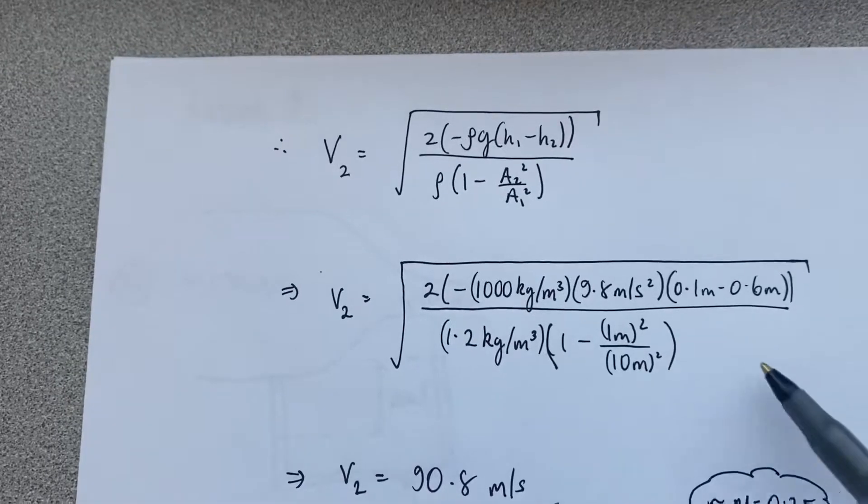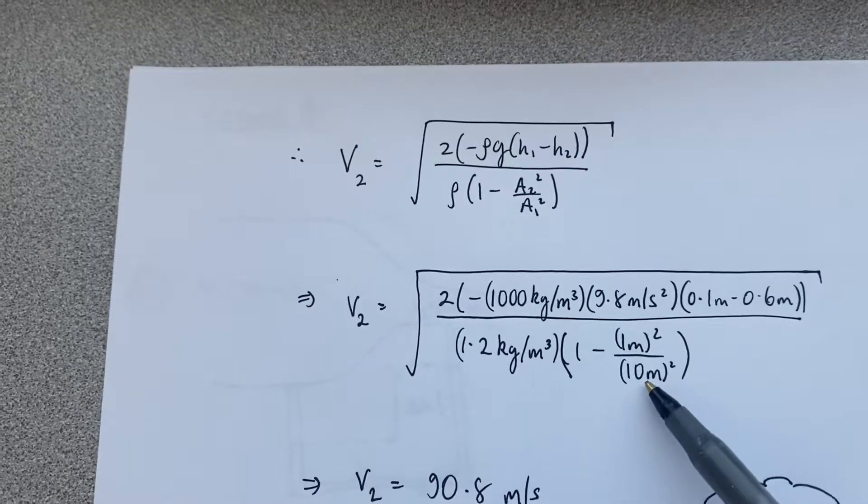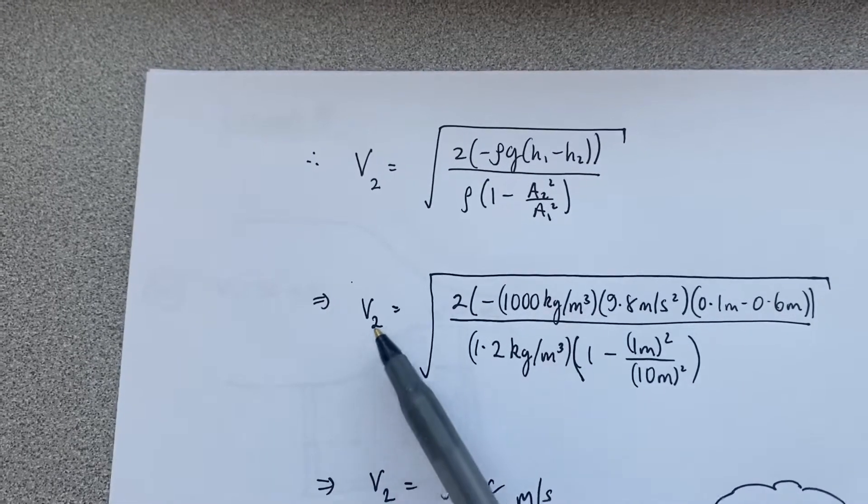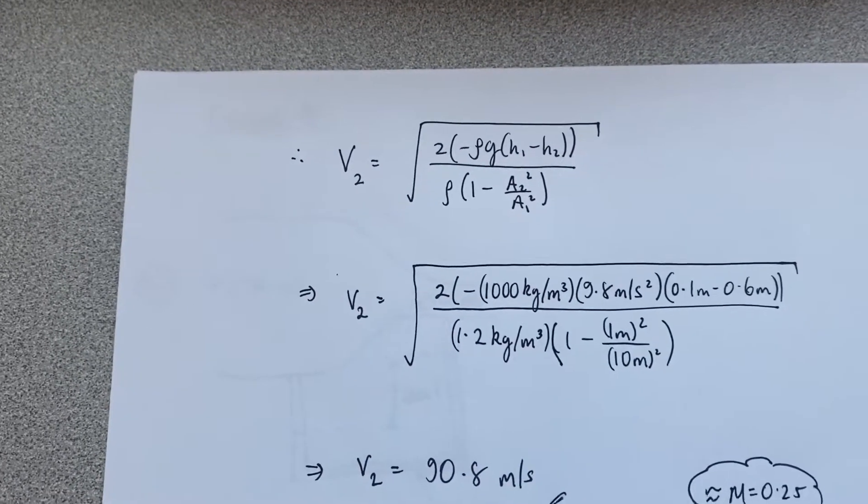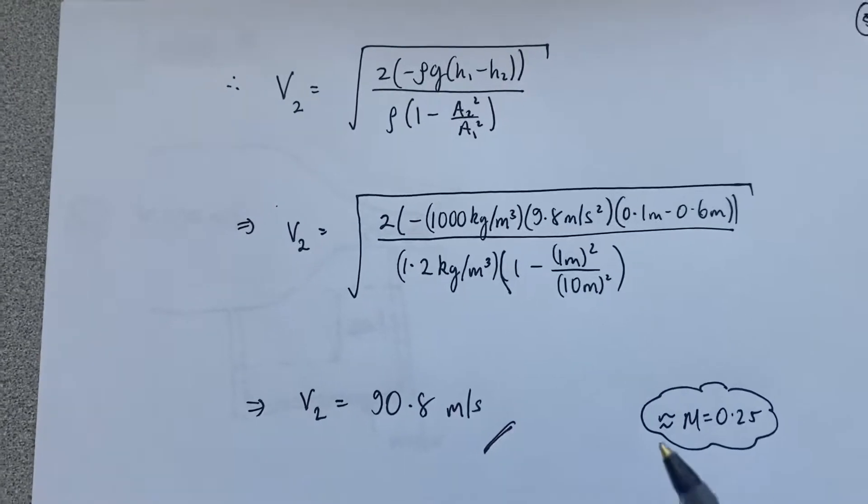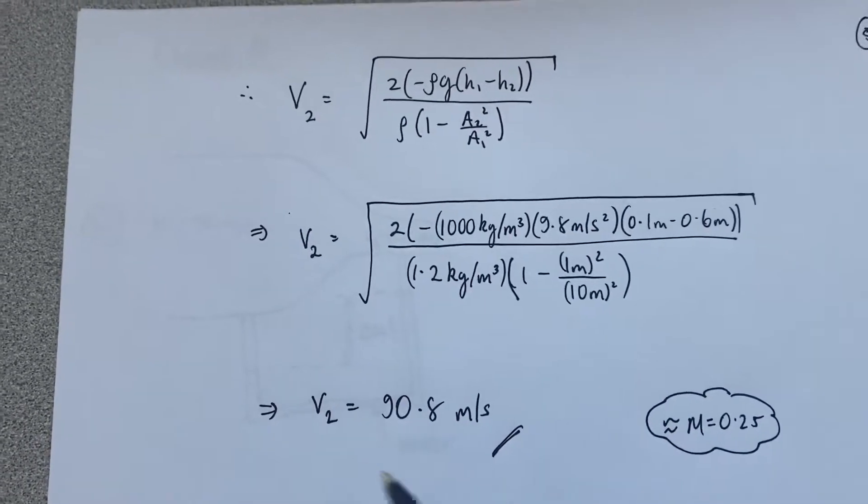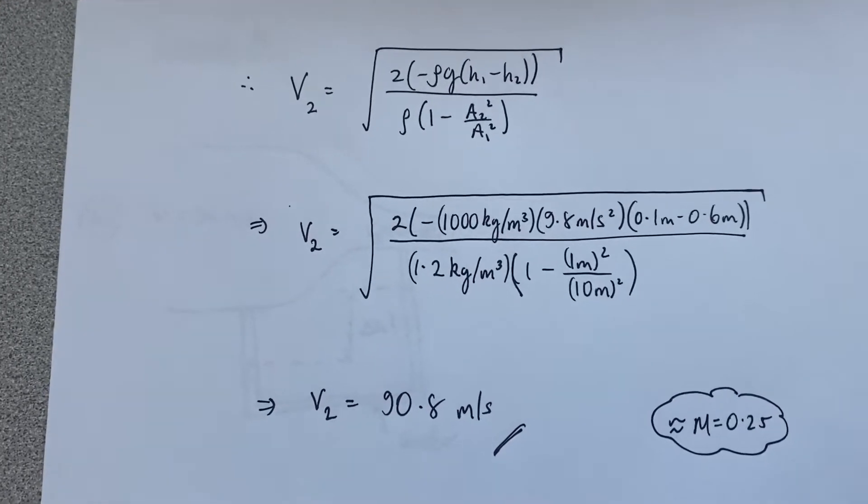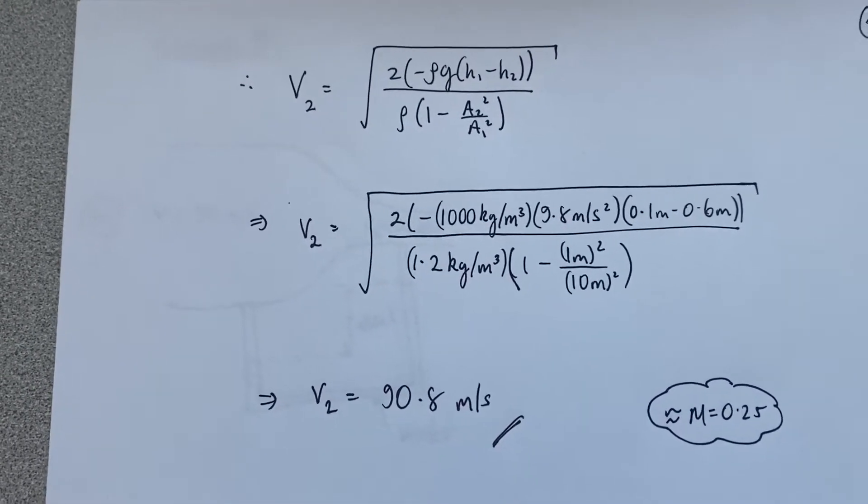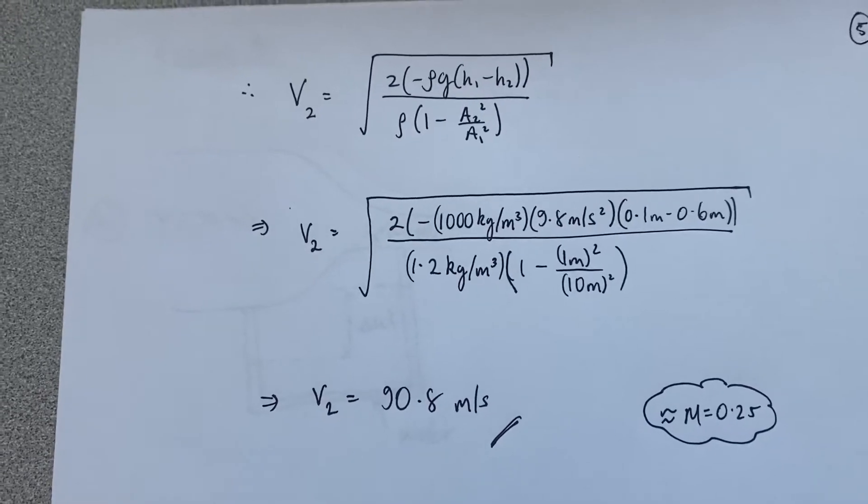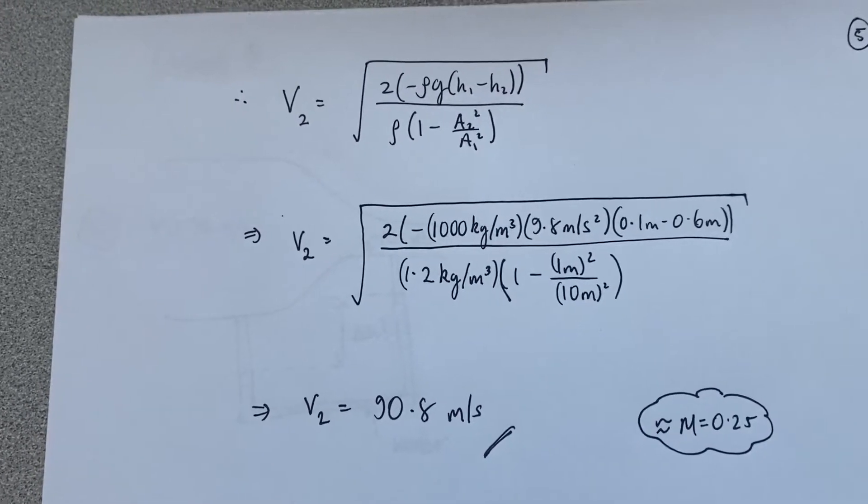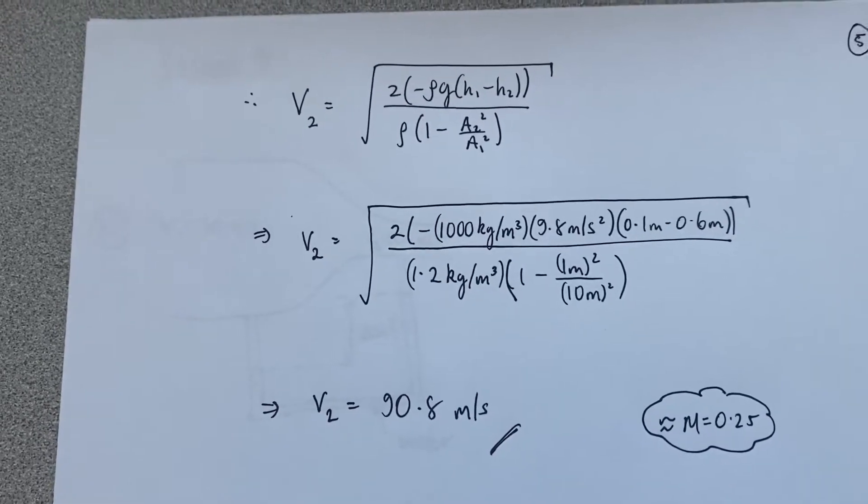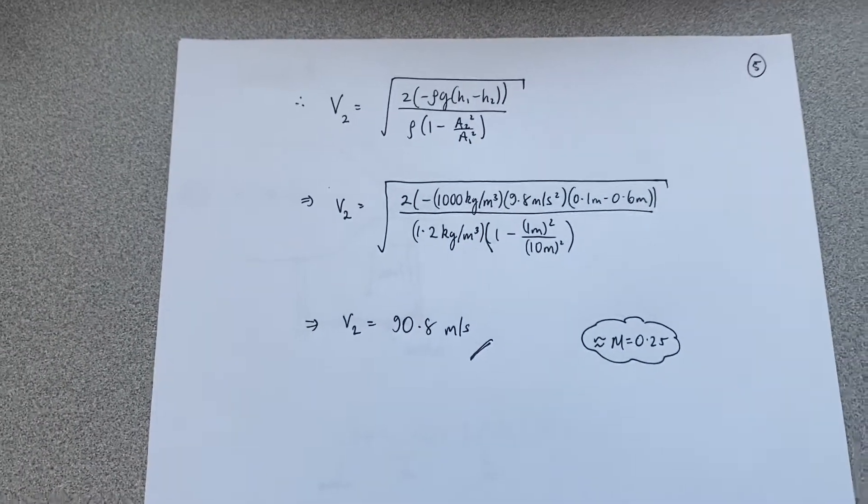Remembering, of course, that the rhos have to correspond to air and water, respectively, I can use the cross-sectional areas and the difference in water levels to calculate the speed in the test section. This time, based on those dimensions, v2 comes out to almost 91 meters per second, which is still less than Mach 0.3, and therefore our assumption that rho is constant is still valid.